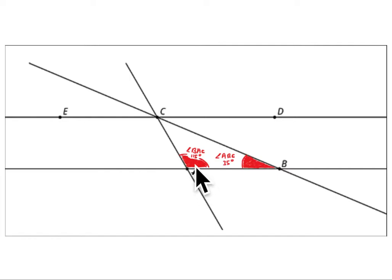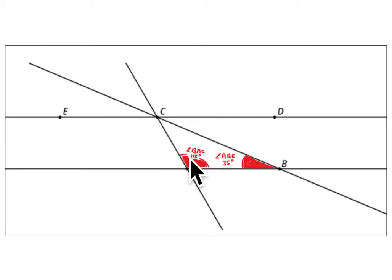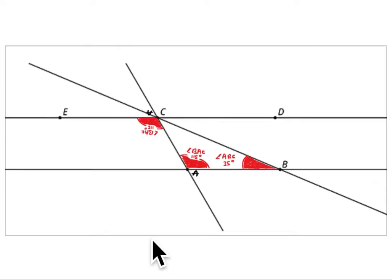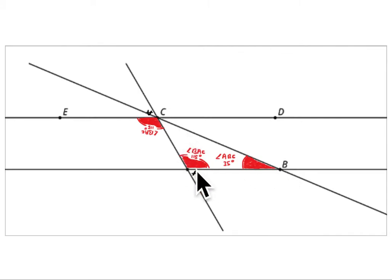You look at a 180-degree rotation and realize these are called alternate interior angles. This angle is congruent to this angle because if you rotate it 180 degrees, it lands right there. So angle ACE is going to be 115 degrees — they tell you that angle BAC is 115 degrees, and a 180-degree rotation makes angle ACE equal to 115 degrees.